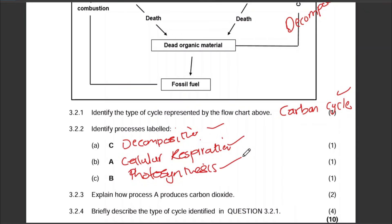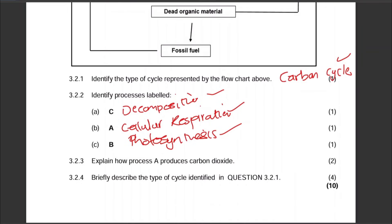Next question: explain how process A produces carbon dioxide. Process A is cellular respiration, and this is for two marks. This is essentially asking for a definition of the process. In cellular respiration, living organisms break down glucose in the presence of oxygen to produce ATP energy.